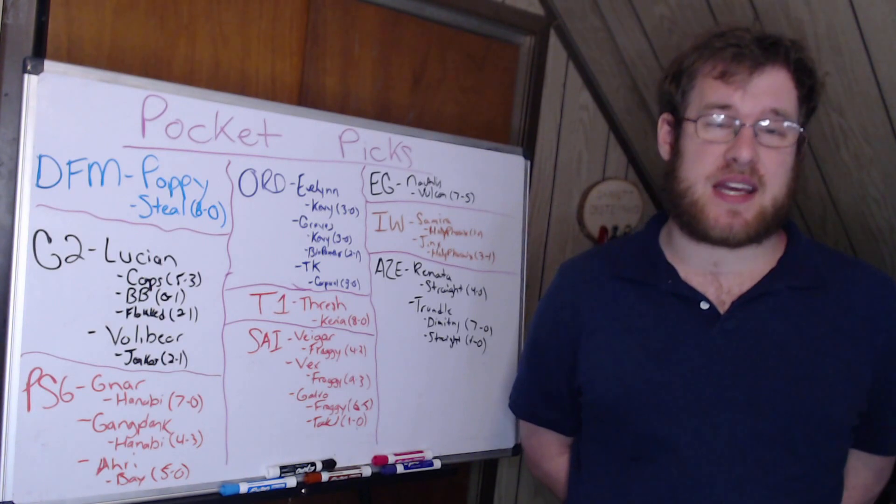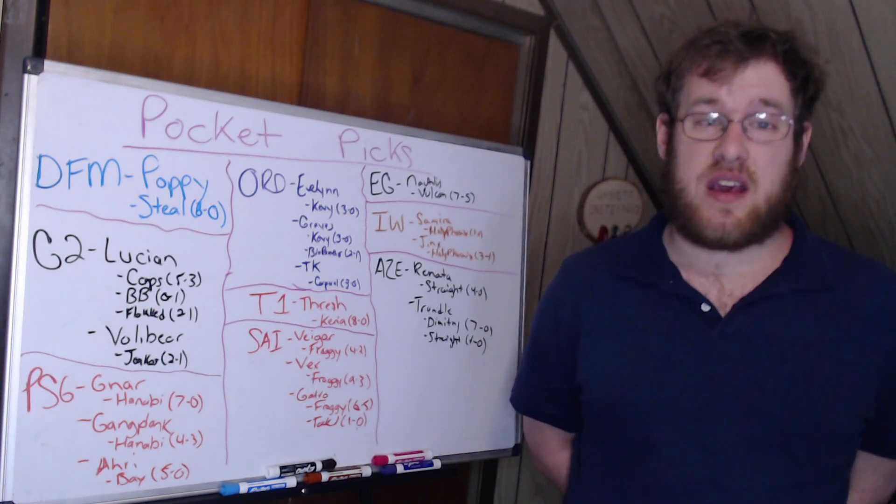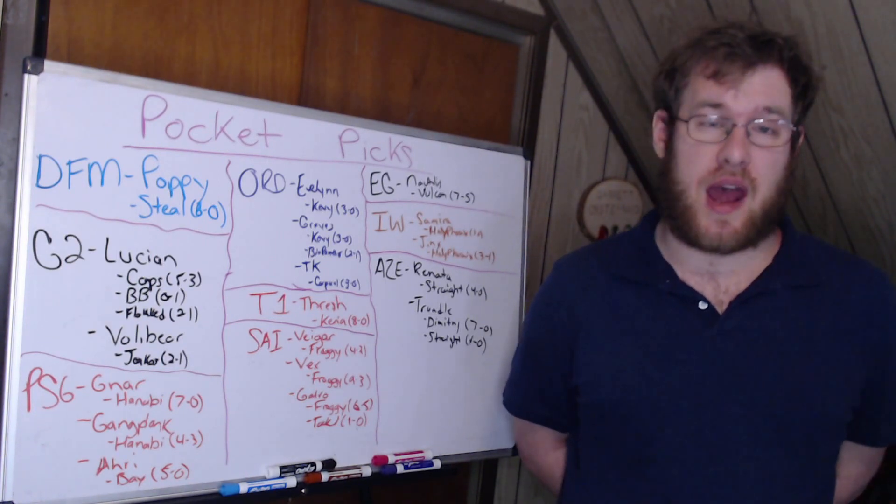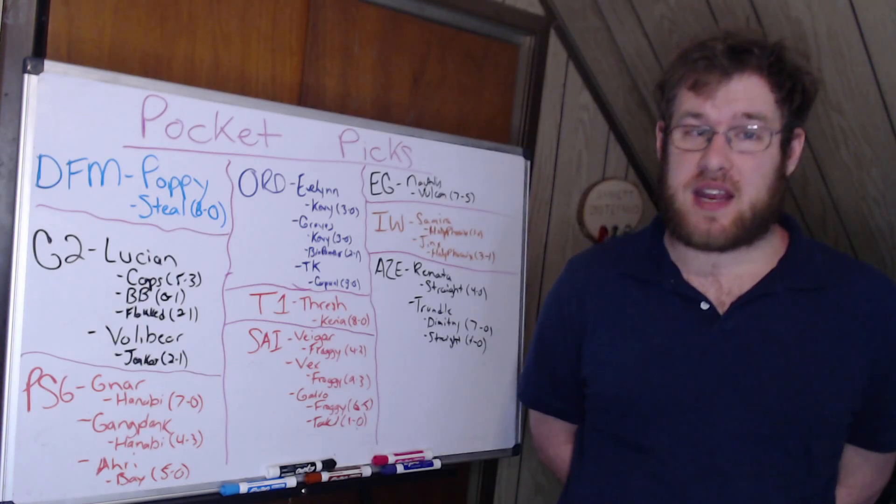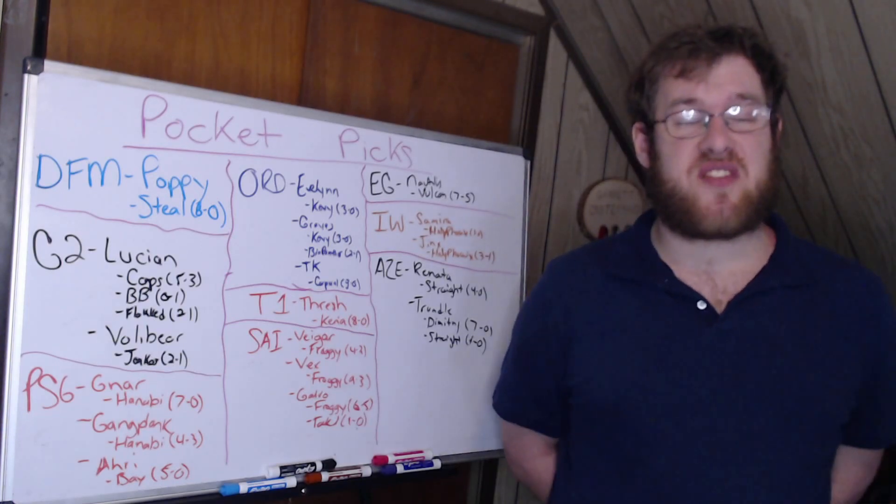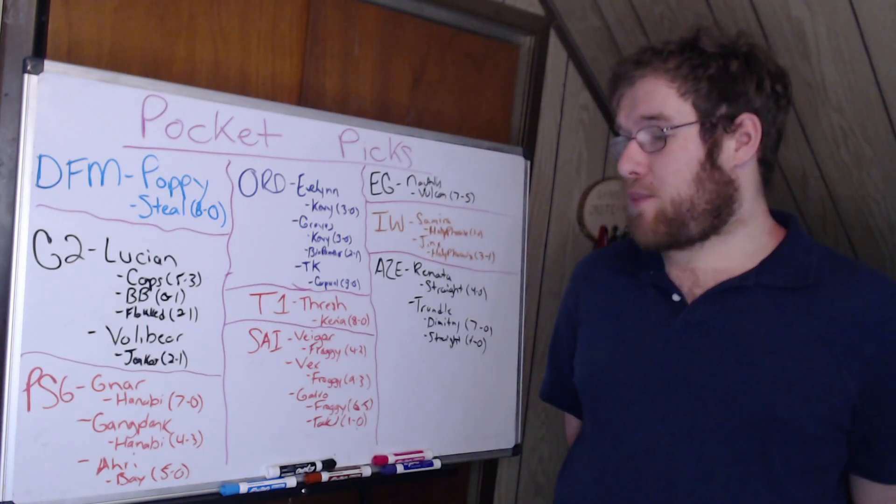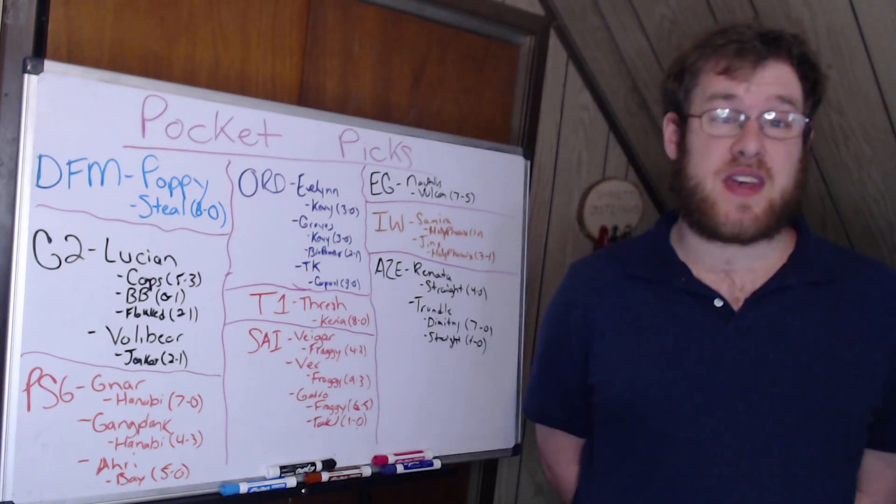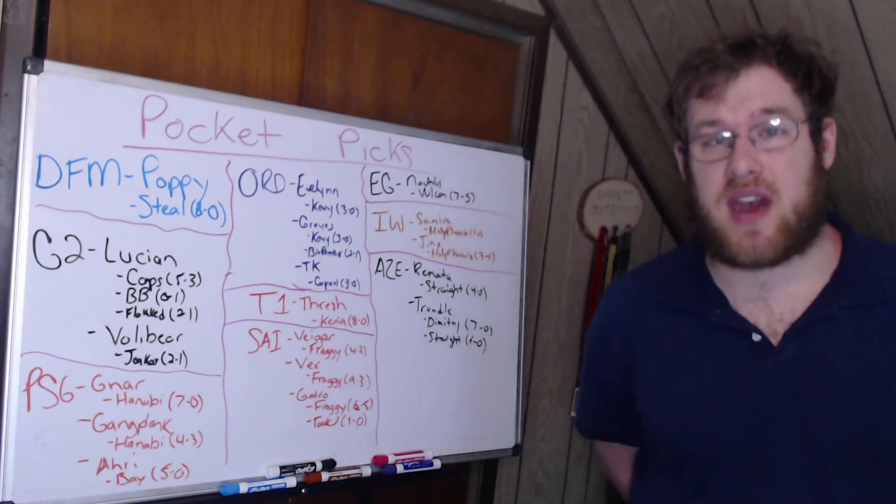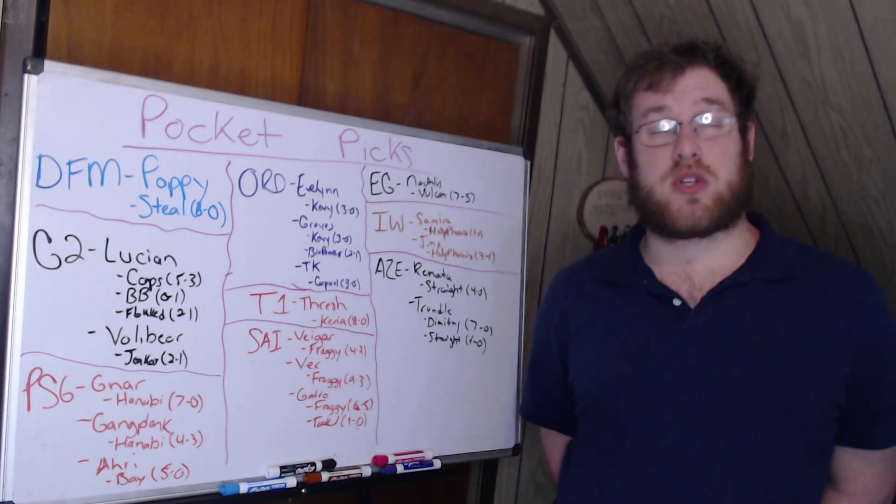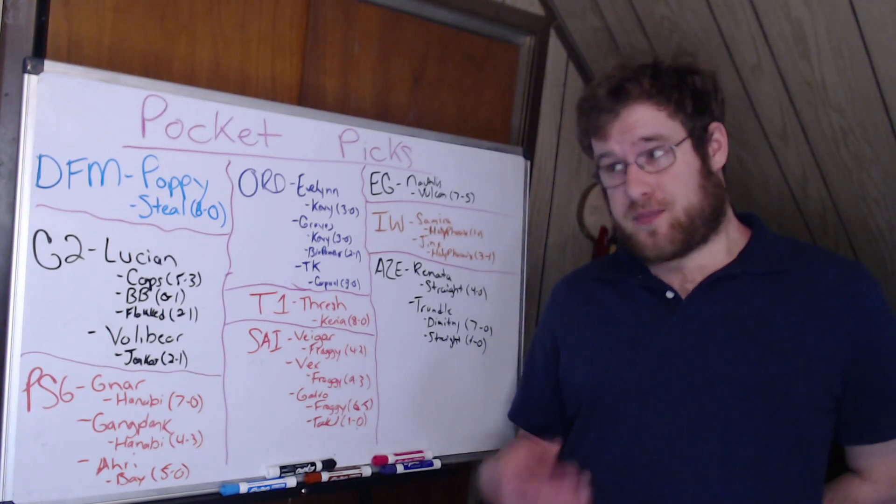PSG: Gnar and Gangplank were banned against Hanabi a lot. Everybody played Gnar this year, but nobody played it like Hanabi. Hanabi went 7-0 on the champion. With Gangplank, he went 4-3, and then Renekton also was banned at a high rate, which Bay was 5-0 on the champion.